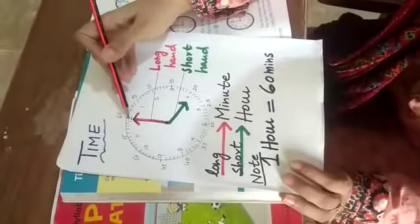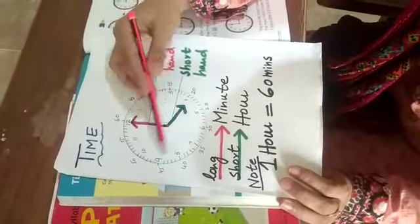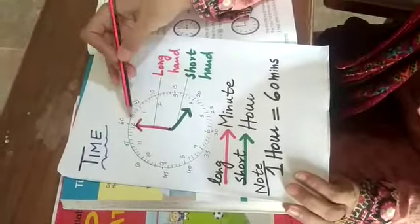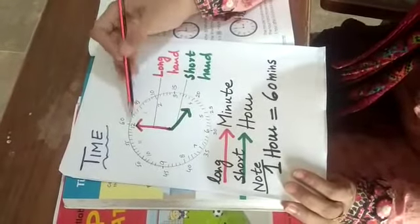See when you see here 1, 2, 3, 4, 5, 6 and so on, then 12 is there. So in between these, the table of 5 is going on.